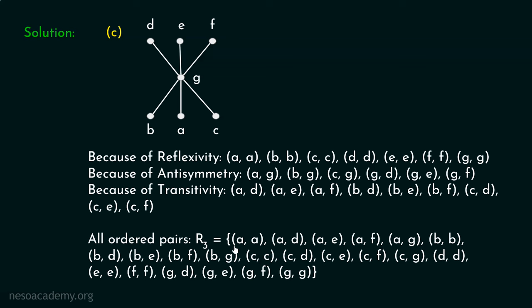The complete relation R3 consists of all ordered pairs: (A,A), (A,D), (A,E), (A,F), (A,G), (B,B), (B,D), (B,E), (B,F), (B,G), (C,C), (C,D), (C,E), (C,F), (C,G), (D,D), (E,E), (F,F), (G,D), (G,E), (G,F), (G,G). This relation R3 is a partial order represented by this Hess diagram.